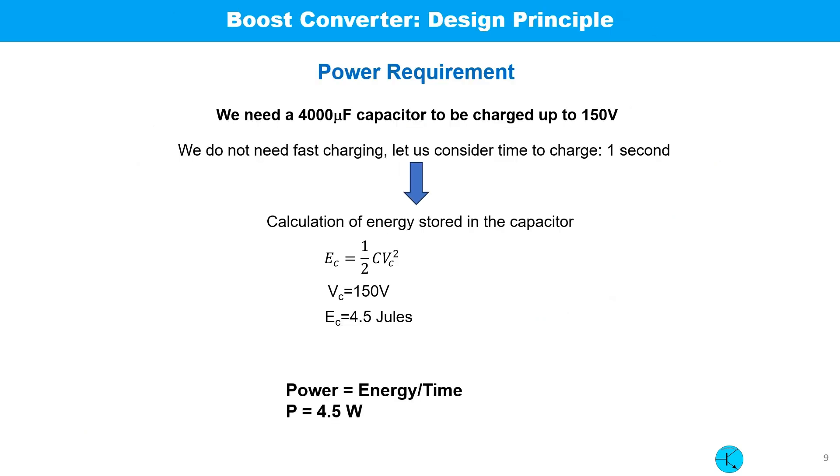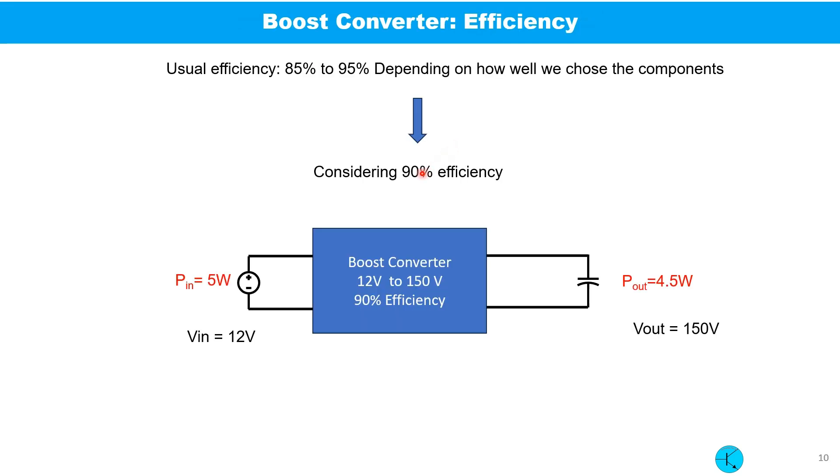So for our coil gun we need a 4000 microfarad capacitor to be charged up to 150 volt. We do not need fast charging, let us consider time to charge is one second. So the energy to be stored within one second at the capacitor is half CV squared, or in our case with V_C at 150 volt, energy becomes 4.5 joules. So the power requirement, energy by time, becomes 4.5 watt. Usually efficiency of a boost converter ranges from 85% to 95% depending on how well we choose the components. Considering 90% efficiency, this is our output power and input power should be around 5 watt.